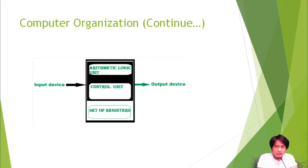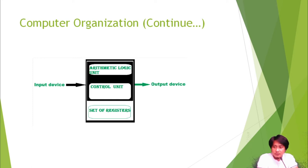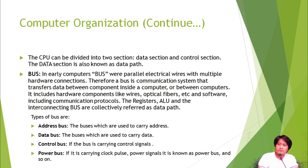Those inputs will be processed inside the central processing unit using the control unit, the set of registers, and the arithmetic logic unit to perform simple to complex operations — for example, one plus one, or more complex operations like manipulating an inventory system or printing documents.